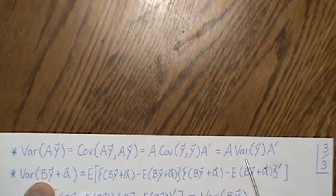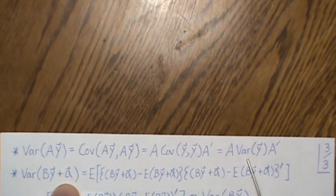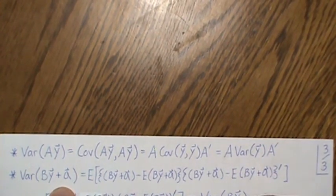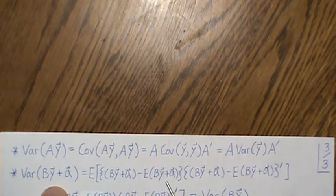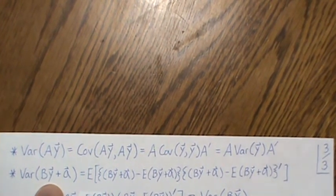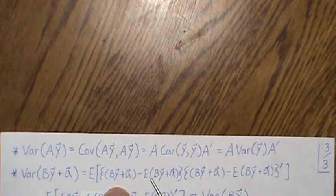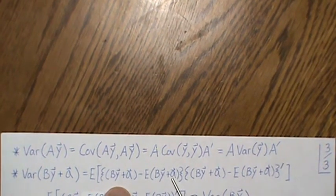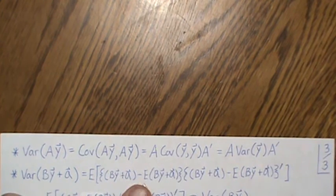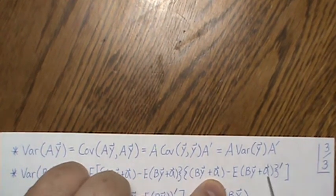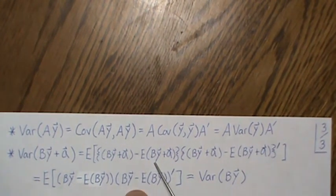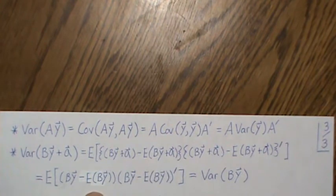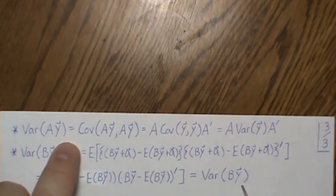For the variance of (b·y + a), where a is a constant vector: when we form (by + a) minus its mean (b·μ_y + a), the constant a cancels out, leaving just (by − b·μ_y). So Var(by + a) = Var(by). You can ignore the additive constant in the variance.